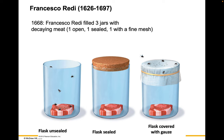In the 1600s, almost 2,000 years after Aristotle, Francesco Redi did an experiment. He filled three jars with decaying meat. He left one open to the air, one he sealed, and one he covered with a fine mesh. The unsealed flask has flies and maggots on the meat. The sealed jar has neither. The flask covered with gauze has attracted flies, and there are maggots on the gauze at the top.